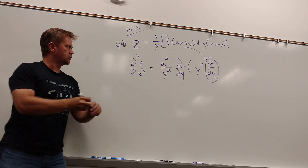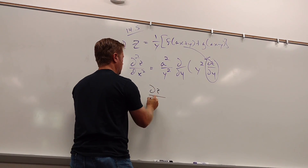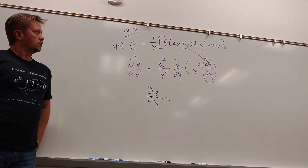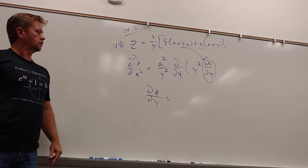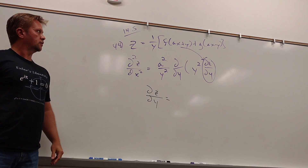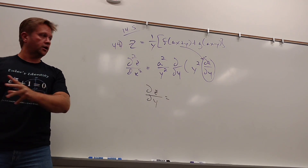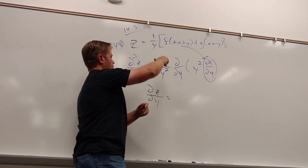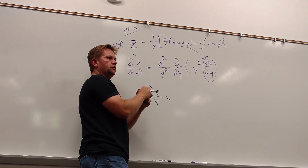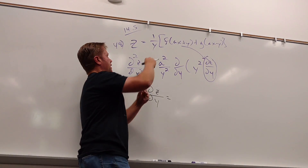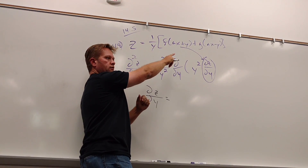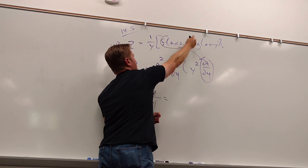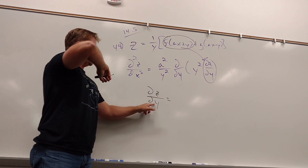What would the partial of Z with respect to Y be? There's a Y inside the function of whatever, so how do you take that derivative? I've got a product rule going on here. You take the derivative of this times all this, and then inside you're going to have to worry about the partial of F with respect to Y.